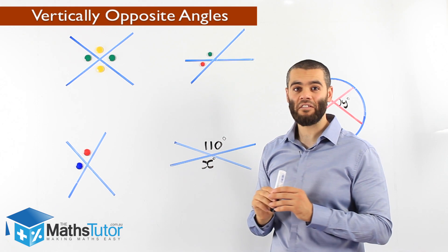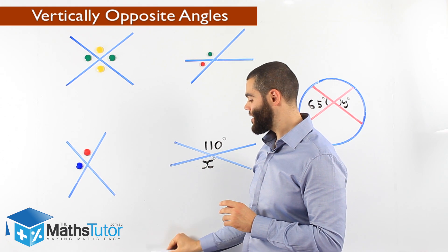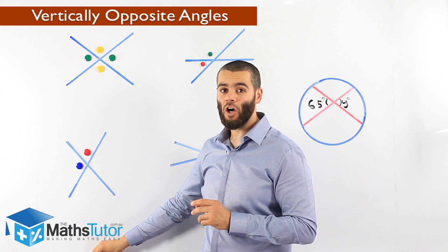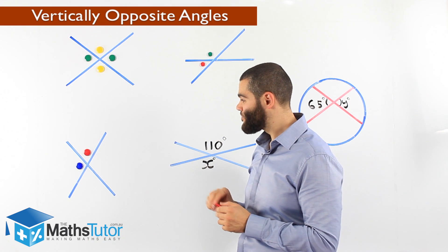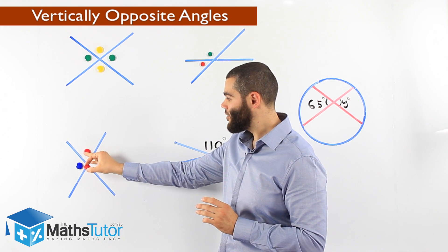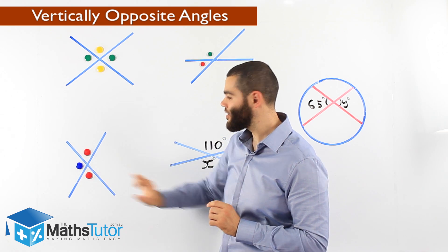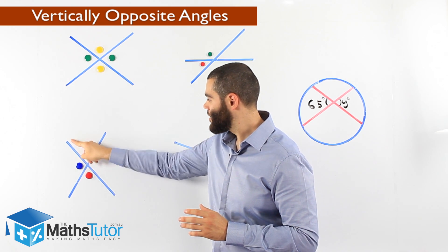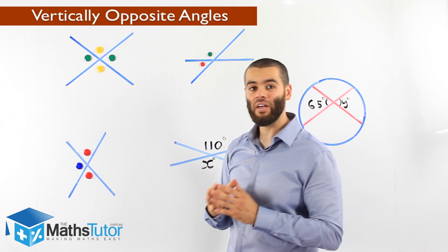Let's try to locate some in this diagram. Where is the vertically opposite angle to the red? The red is there, and the vertically opposite angle is directly opposite. And there it is — this angle is vertically opposite to that angle there.